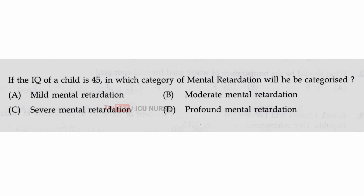If the IQ of a child is 45, in which category of mental retardation will he be categorized? The correct answer is B, moderate mental retardation.